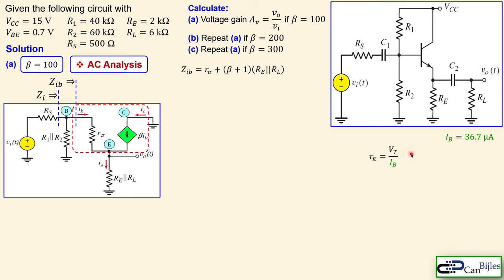To calculate the voltage gain VO over VI, we split the problem: (VB over VI) times (VO over VB). The first ratio VB over VI is simply the voltage division — ZI over (RS plus ZI) — giving an attenuation factor. For the second part, VB is the voltage across Rπ plus the voltage across the parallel combination of RE and RL, while VO equals IE times (RE parallel RL).